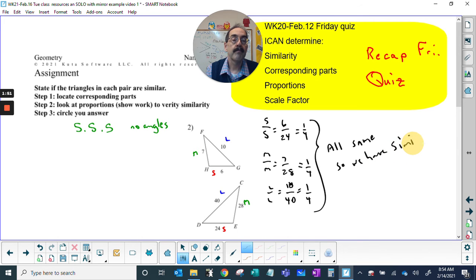They're all the same, so we have similarity. Now vocabulary: proportion, proportion, proportion. So the proportions, the ratios, the scale factors are all the same.